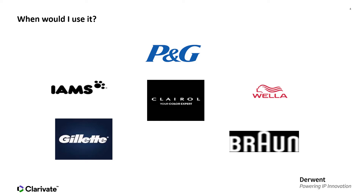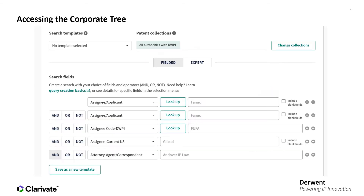For example, to see the full portfolio for Procter & Gamble, you would need to include Iams, Clairol, Vela, Gillette, and Braun to do a comprehensive search. The Corporate Tree saves you work because it's an easy-to-use lookup tool in Derwent Innovation that gives you the ability to find all the patents related to a given entity.